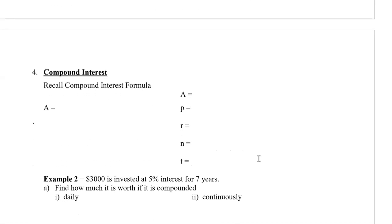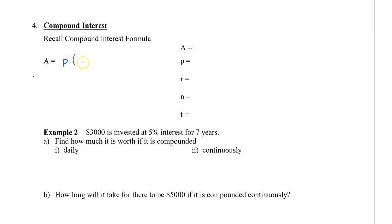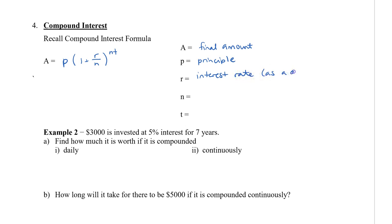I want to show you one more type of problem: compound interest. Recall the compound interest formula: A equals P times the bracket 1 plus R divided by n, to the power of n times t. A is our final amount, P is our principal, R is the interest rate as a decimal, n is the number of compounding periods — how many times we get paid or pay in one year — and t is our time. Let's compare what happens when $3,000 is invested at 5% interest for seven years, compounded daily and then continuously.